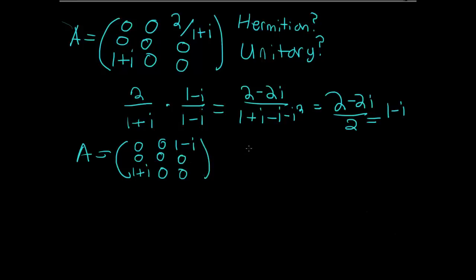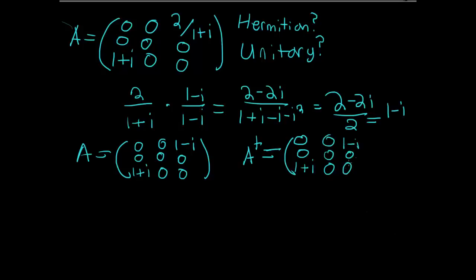Now we see A Hermitian conjugated: the transpose sends 1−i and 1+i to their transposed positions, and taking the complex conjugate flips the signs. The result equals A itself — it is Hermitian. Therefore A equals A Hermitian conjugated, which means A is Hermitian.